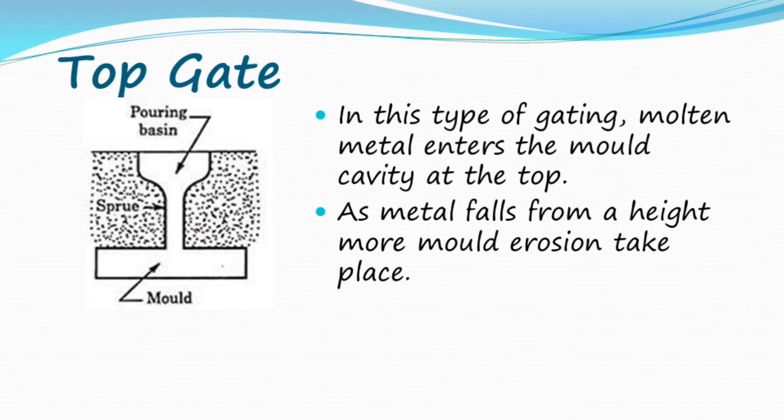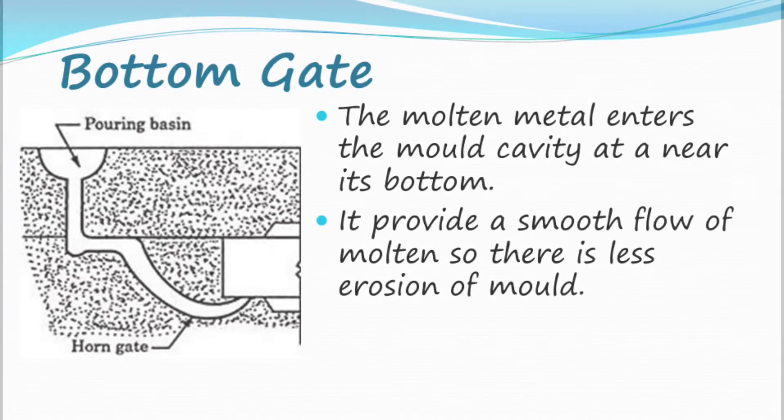Top gate: In this type of gating, molten metal enters the mold cavity at the top. As metal falls from a height, more mold erosion takes place.